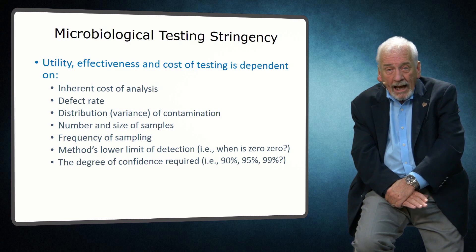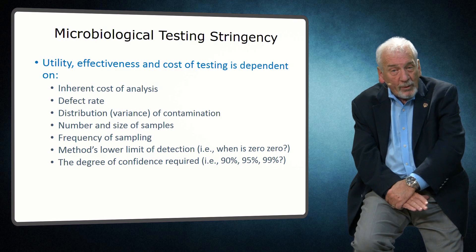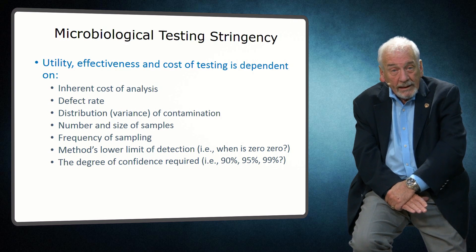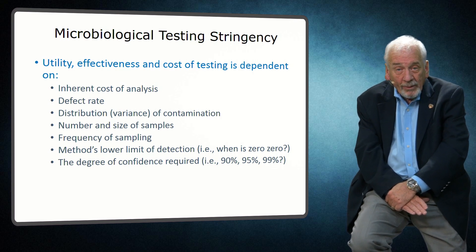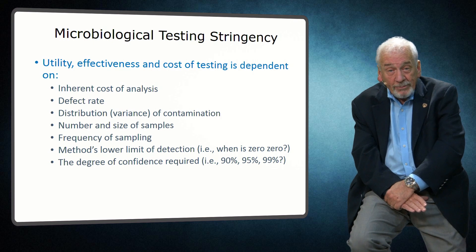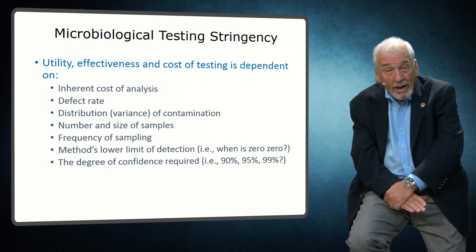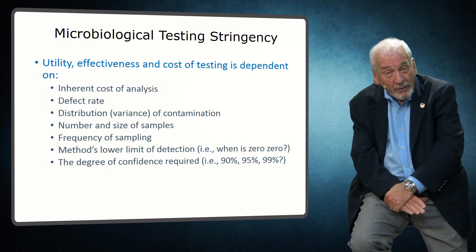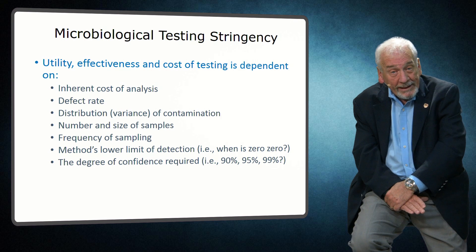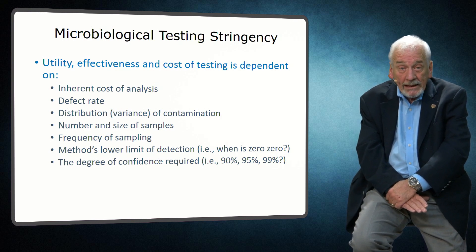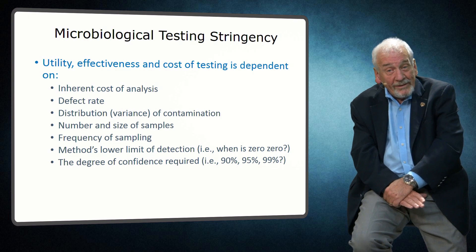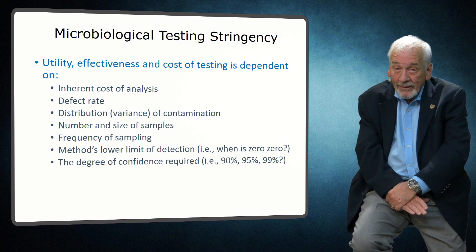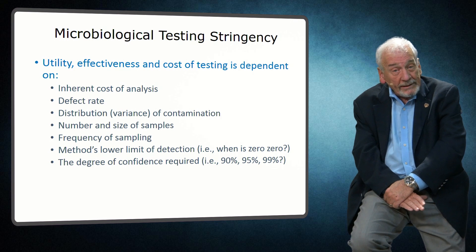One of the key attributes of a microbiological testing program is establishing how stringent the program needs to be in terms of the likelihood that a target microorganism will be detected. This can be a highly complex decision since the degree of stringency is based on a variety of parameters such as why the testing is being performed, the cost of the analysis, the expected defect rate, the distribution of contamination, the number and size of samples, the frequency of sampling, the lower limit of detection of the testing method, and finally the degree of statistical confidence required.